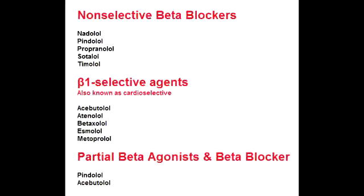What is the benefit of beta-1 selective antagonists? They are beneficial in patients with comorbid pulmonary disease. Comorbid means a disease or pathological process that occurs simultaneously with another — two disease processes occurring simultaneously.